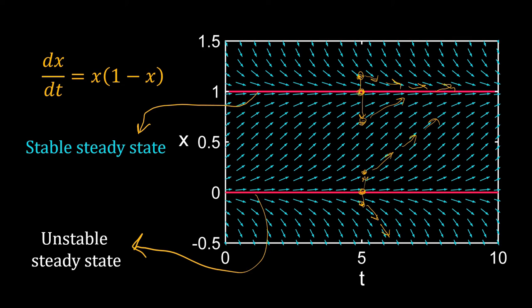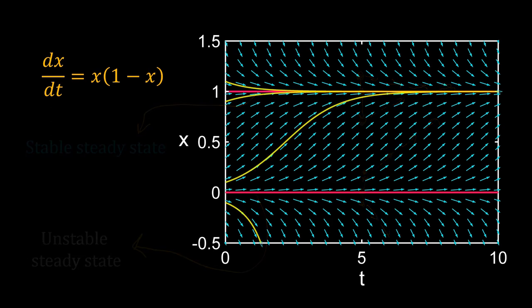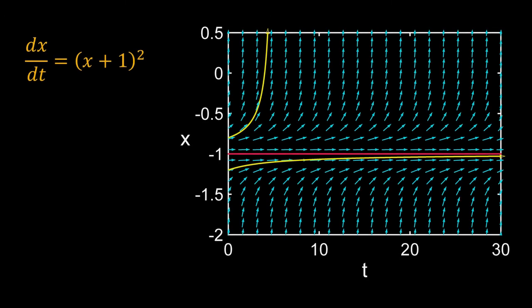For an unstable steady state, if we perturb the system from the steady state, with time the system will diverge away from the steady state. I have shown the behavior around these two steady states by drawing trajectories in the direction field. If you start just above x equal to 0, with time x will reach 1, as that is the stable steady state. There can be another type of steady state — check this direction field.